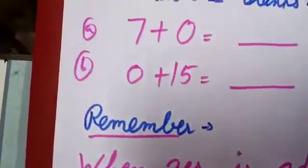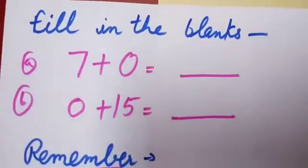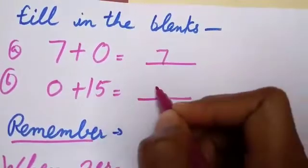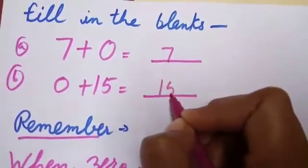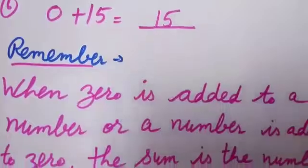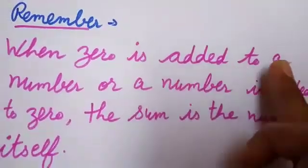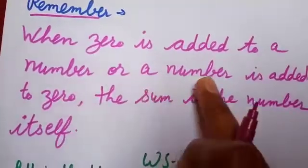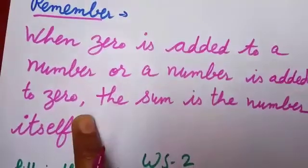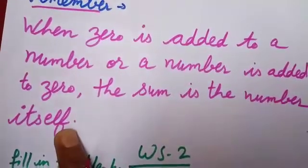Now come to the next property. Let us do this fill up. 7 plus 0 equals 7. 0 plus 15 equals 15. It means when 0 is added to a number, or a number is added to 0, the sum is the number itself.